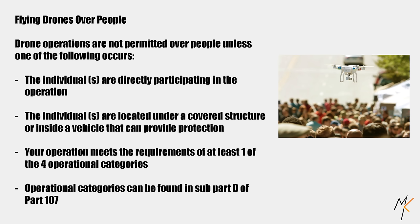Class A, or Class Alpha airspace, is the only class not on the sectional chart because it starts high above the ground at 18,000 feet MSL. This is the class of airspace you fly in when traveling on a commercial airliner — it starts from 18,000 feet and goes as high as 60,000 feet.